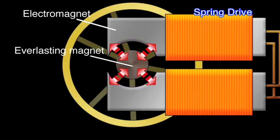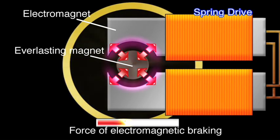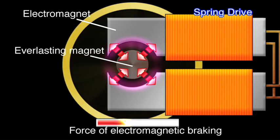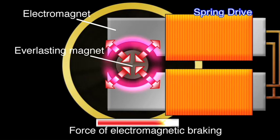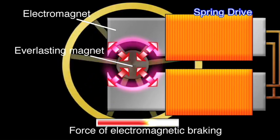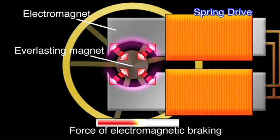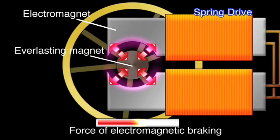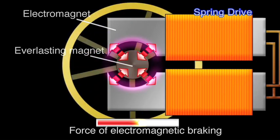When a rotor attached with a permanent magnet rotates, it is pulled by magnetism generated by the outer electronic magnet and becomes braked. As this friction-free electronic braking produces little sound, the overall effect is a quiet one.